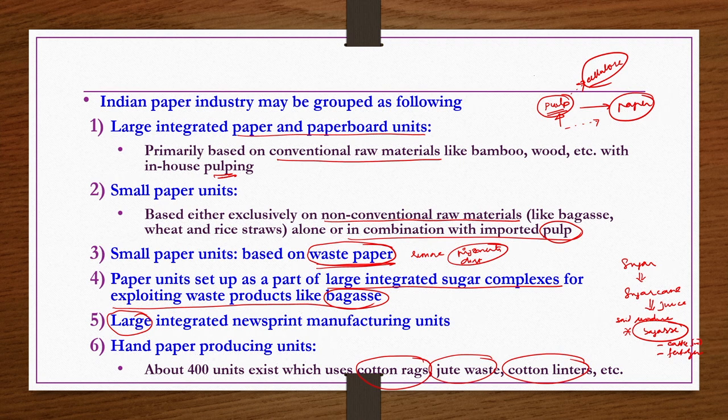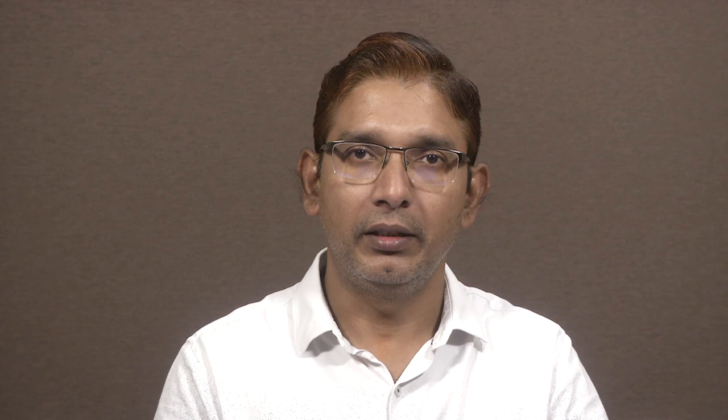Now we discuss cellulose raw materials. We are going to get cellulose by pulping of wood, bagasse, bamboo, or any other raw material. From wood, we separate out lignin and non-cellulose components and extract the cellulose components. Those cellulose components go through certain processes to get the pulp required for paper making. The raw material should meet proper requisites so that paper industry growth is not inhibited.